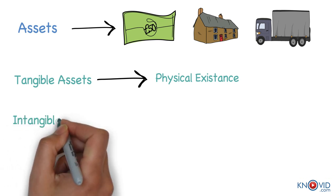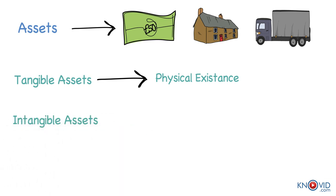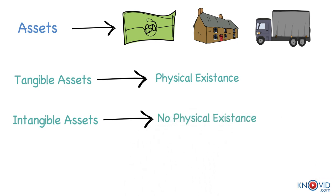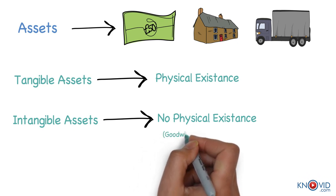Intangible assets are those assets having no physical existence but their possession gives rise to some rights and benefits to the owner. It cannot be seen and touched. Goodwill, patents, trademarks are some of the examples of intangible assets.